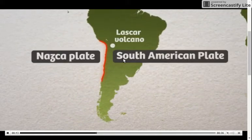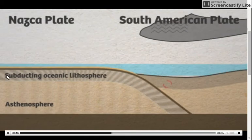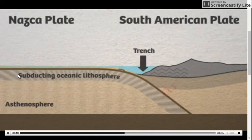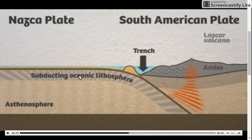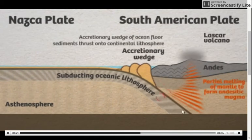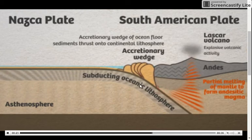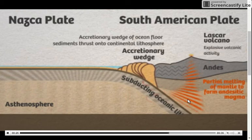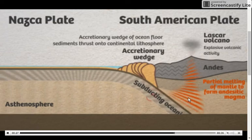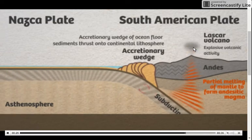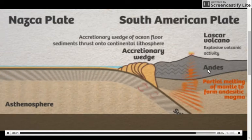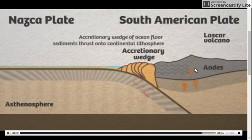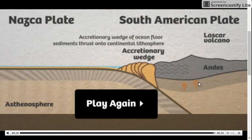On the left, we have the Nazca plate, and on the right, we have the South American plate. The Nazca plate consists of oceanic crust, which always subducts underneath the continent because it's denser. In this subduction zone, we're melting this ocean crust, and it's rising up and making volcanoes on the continent — this is a volcanic mountain chain, the Andes Mountains.